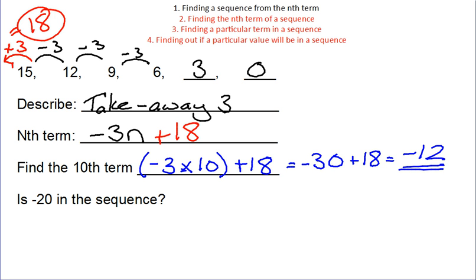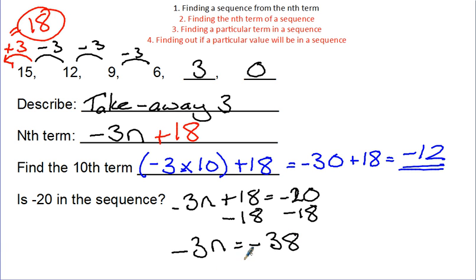Is minus 20 in the sequence? Again, you need to be able to solve equations for this. So, if you're not confident in solving equations, you need to go back to that, because different parts of maths come up all over the exam paper. So, it's not just missing out on one set of marks. You need to be able to apply maths all over the place. So, make sure you're confident in all of these areas. So, minus 3n plus 18 is equal to minus 20. So, I'm going to take away 18 from both sides. That leaves me with minus 3n is equal to minus 38. Now, immediately I know that 38 is not in the 3 times table, and so, no, minus 20 is not in the sequence.